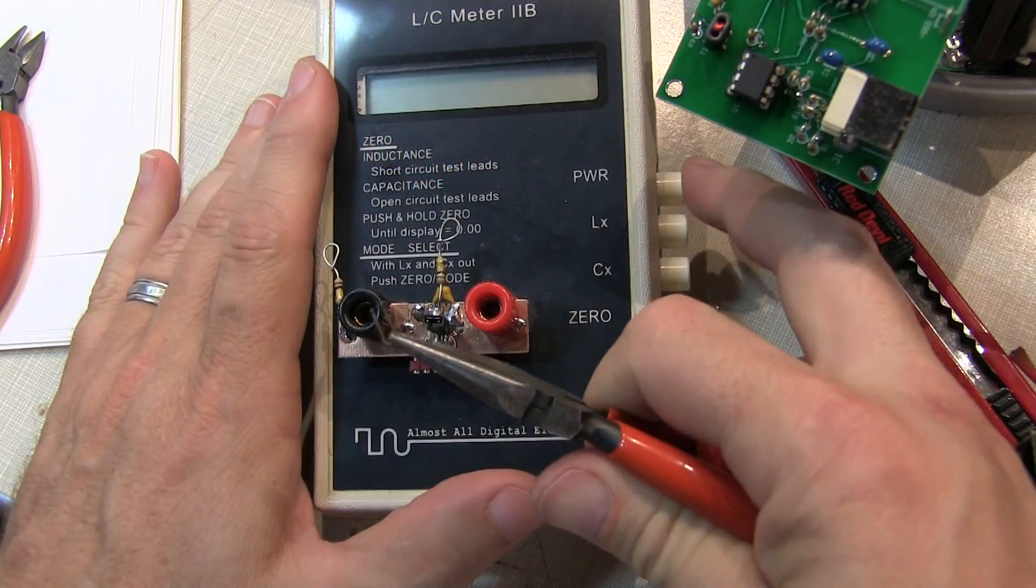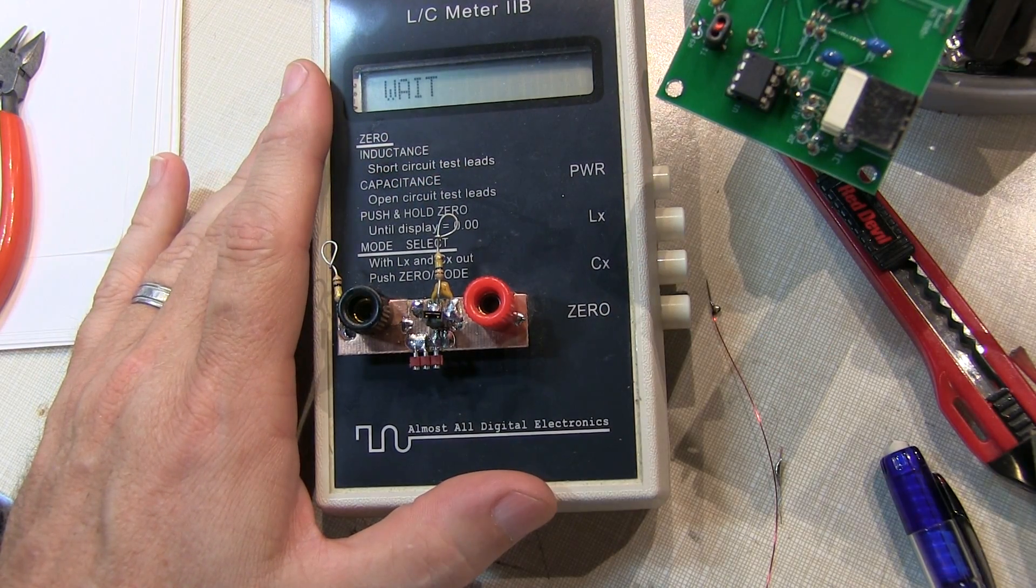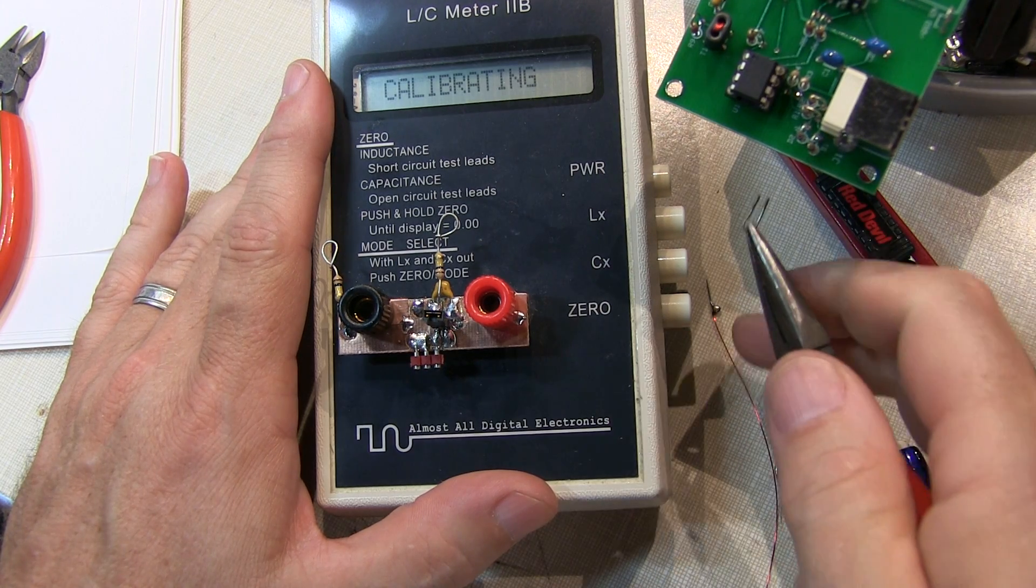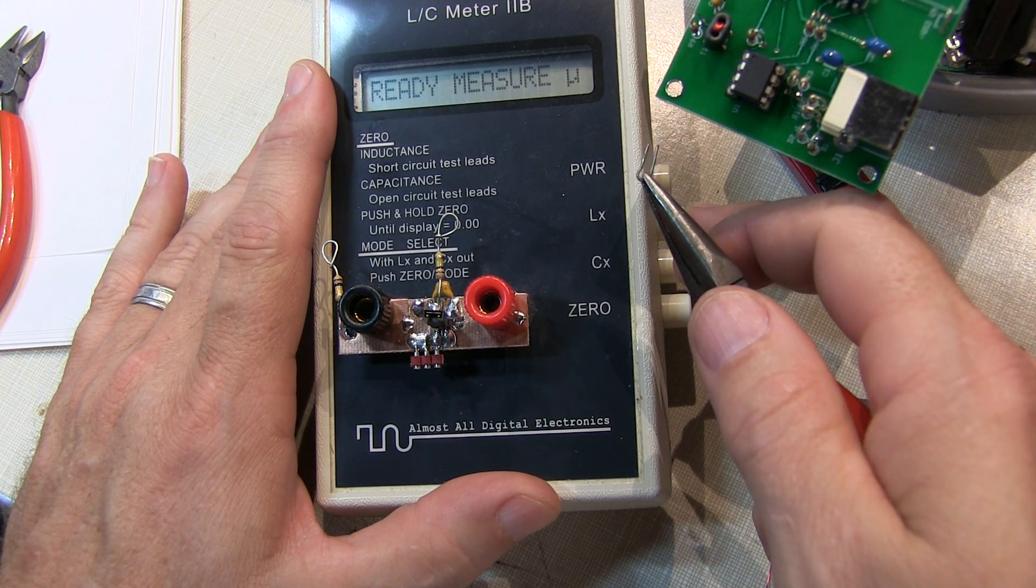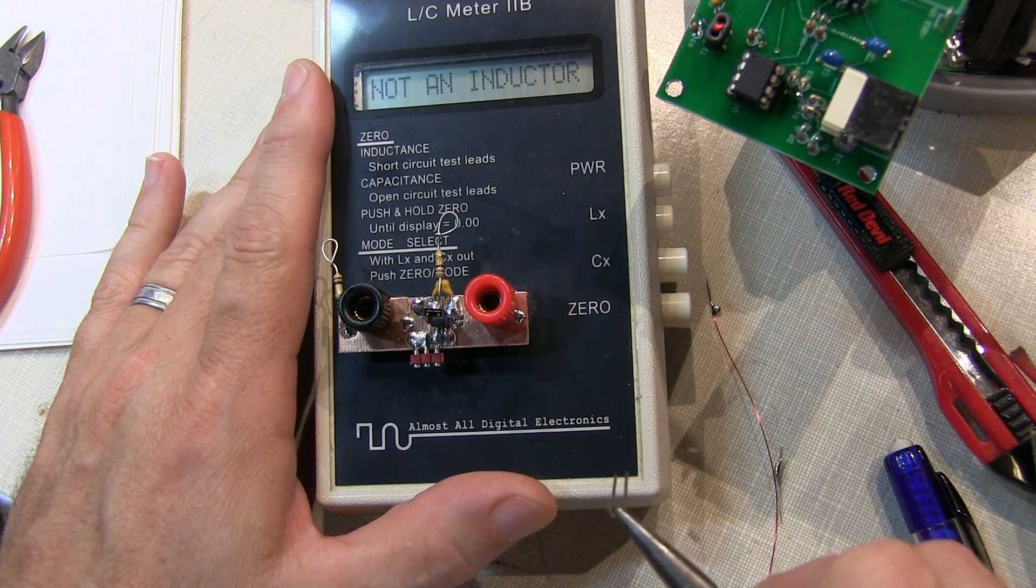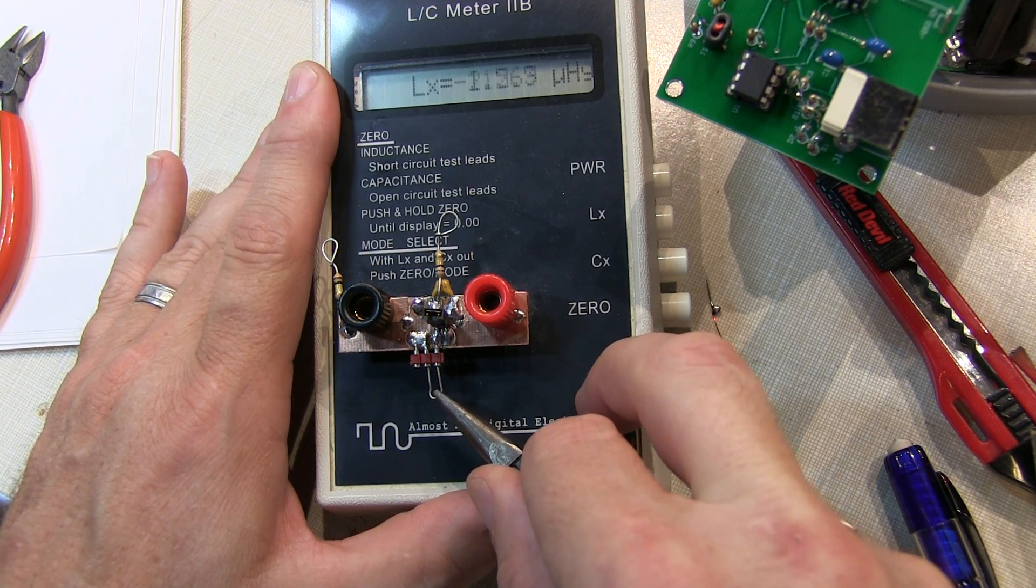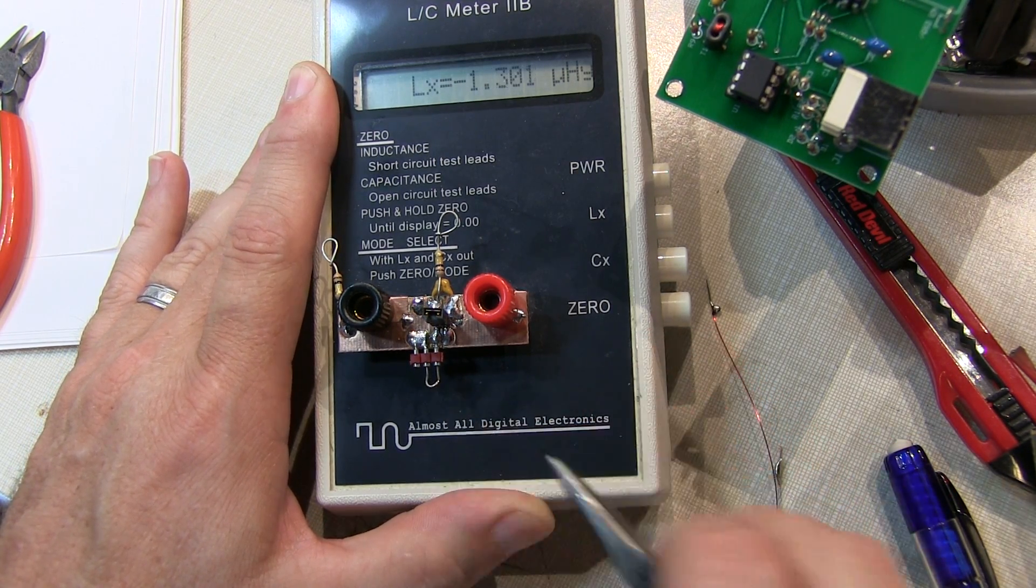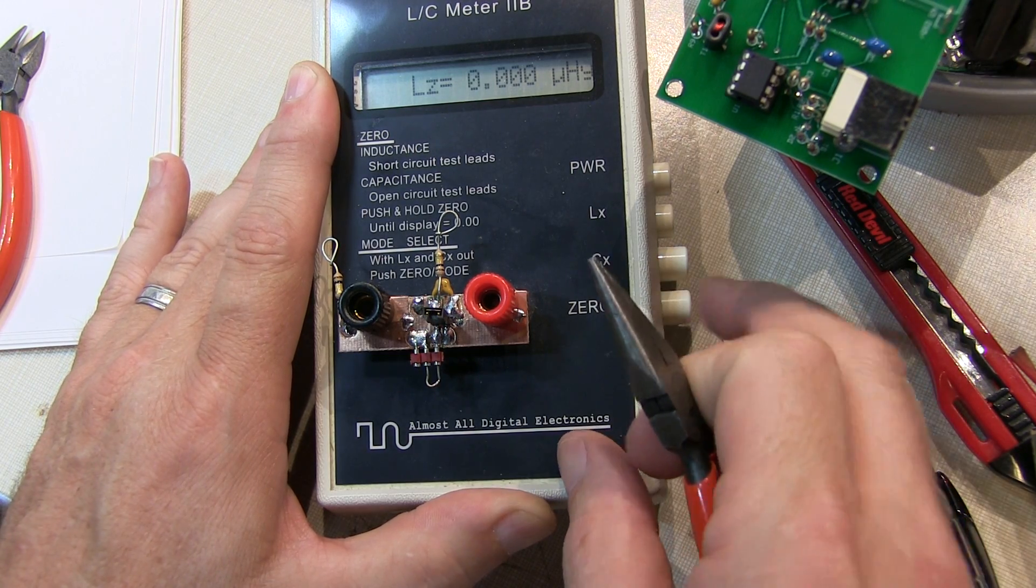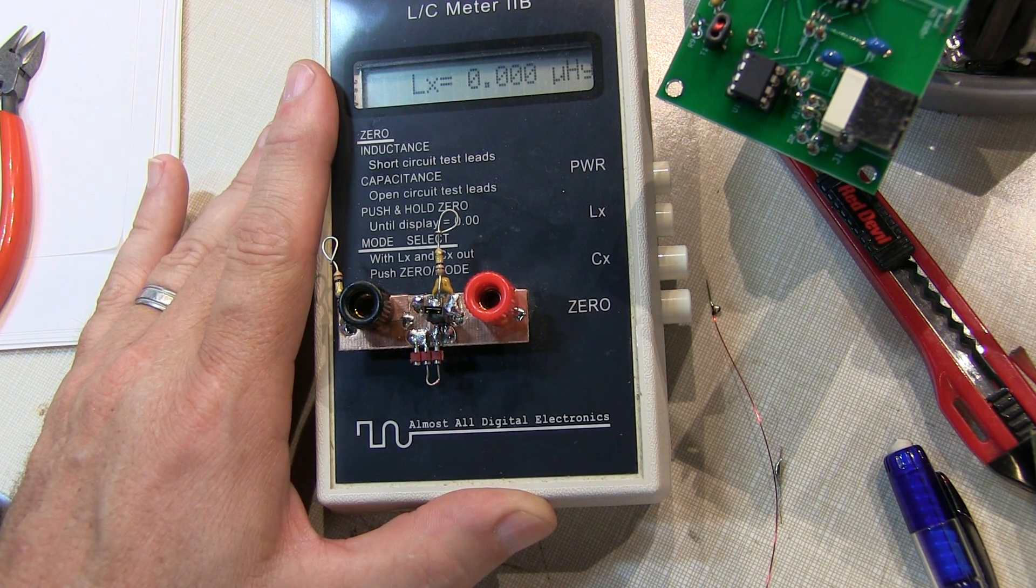To measure the inductor, we'll turn the meter on here and it's going to be a relatively small value so I want to zero out my meter. So put it in the inductance measurement mode, I'm just going to insert a short little jumper wire in here and hit the zero button to zero that out.